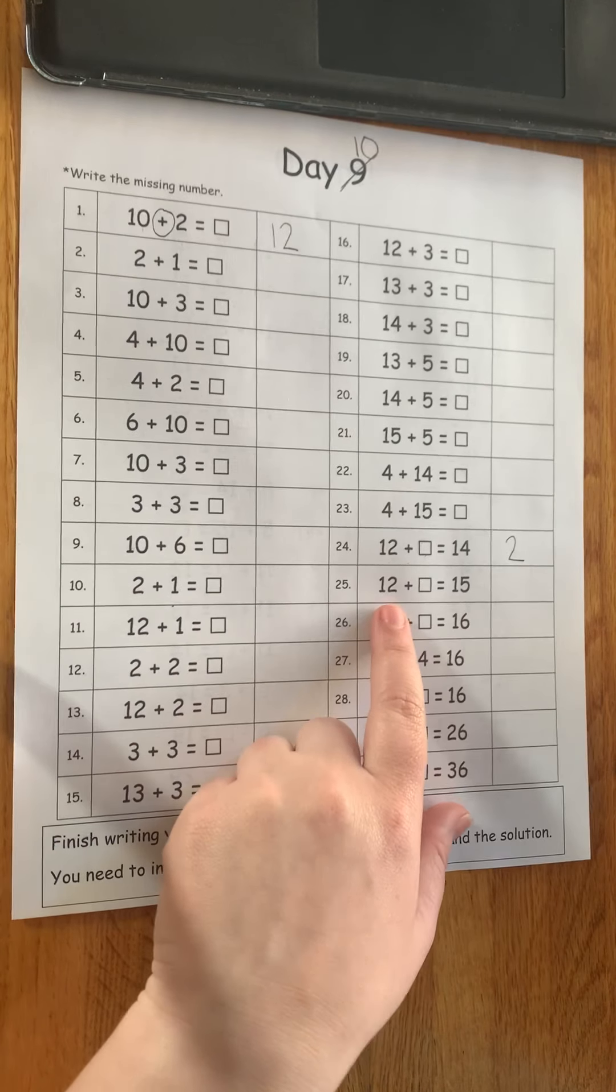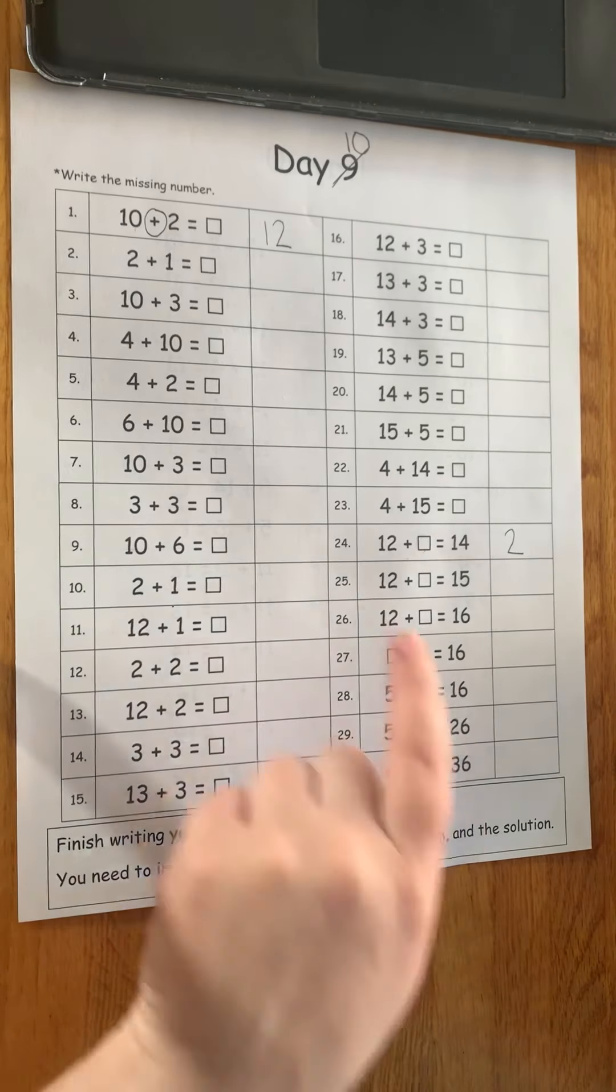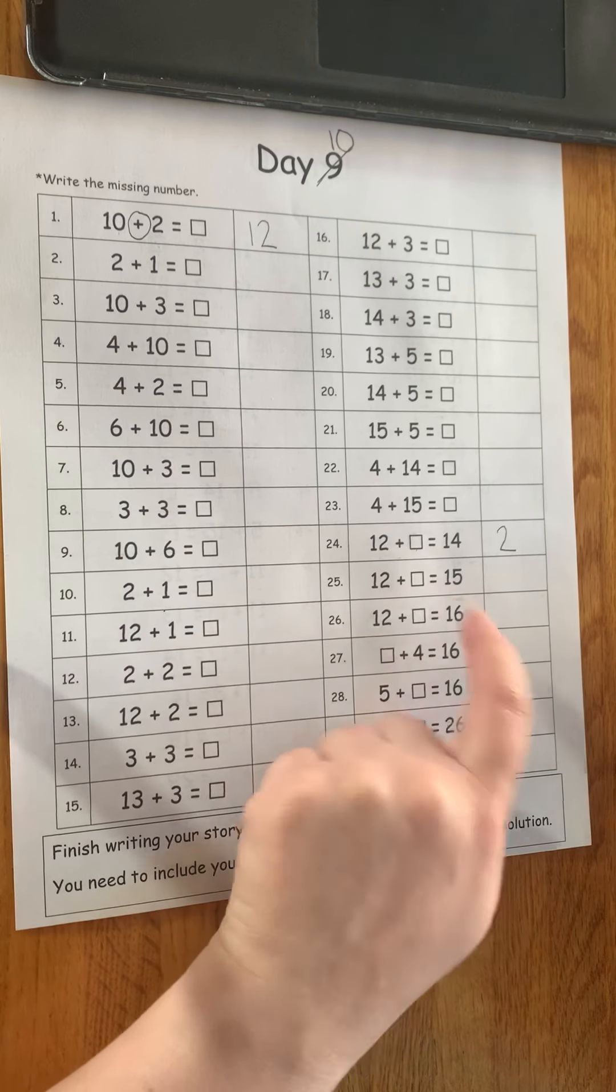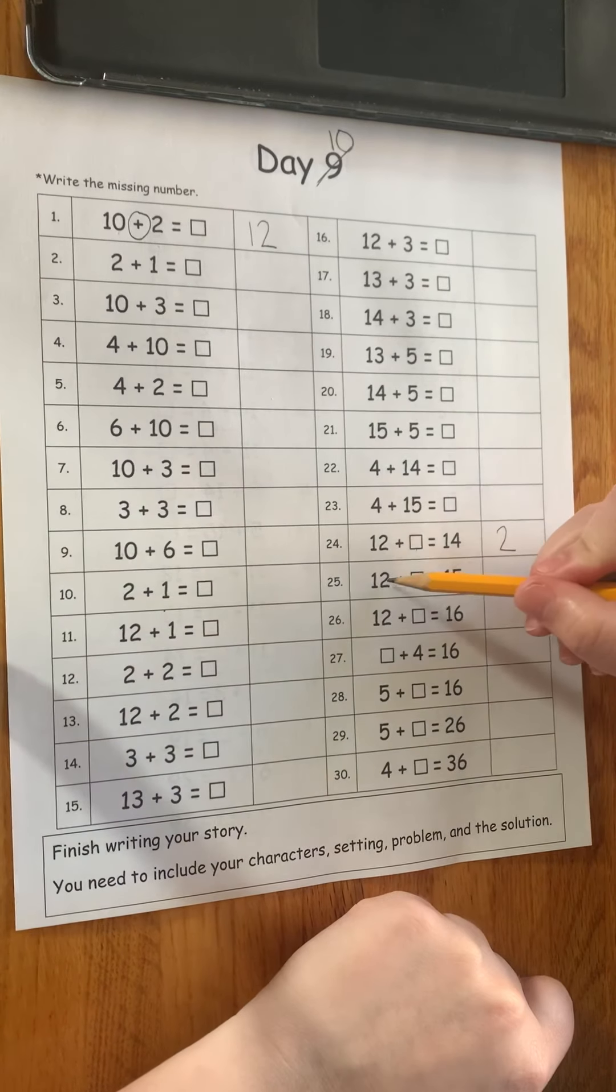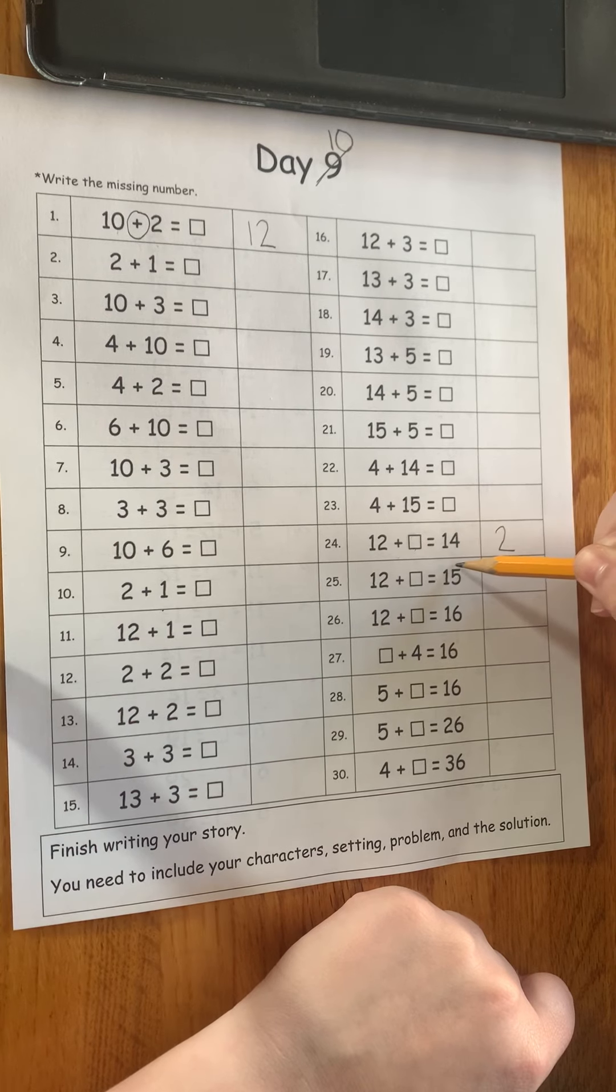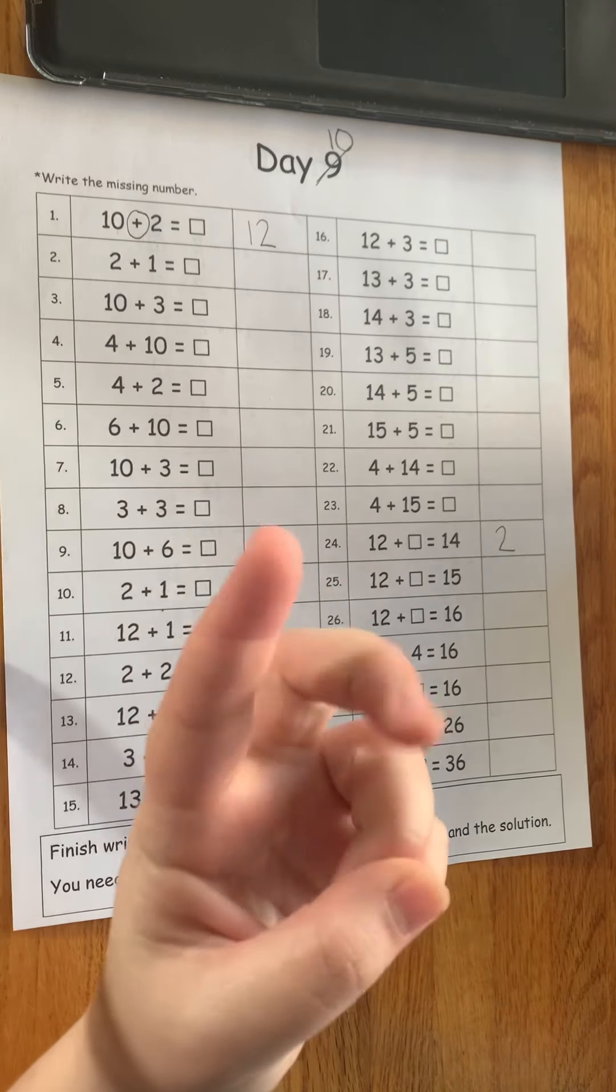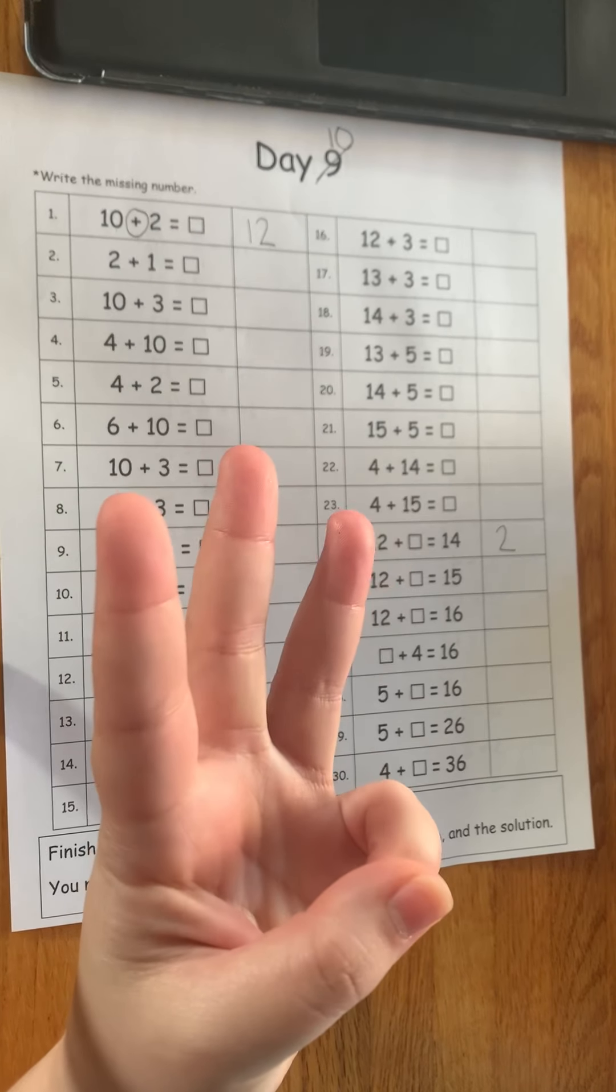I'll do one more. I'll do the next one with you. Number 25 is 12 plus blank equals 15. So same thing. I have to start at 12 and I need to figure out how we're going to get to 15. So 12, 13, 14, 15. 3.